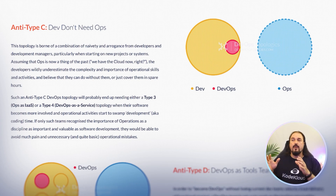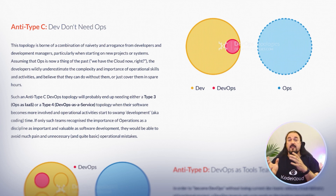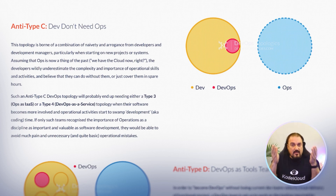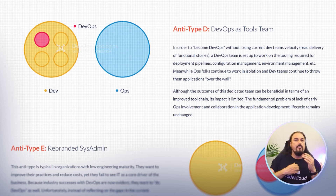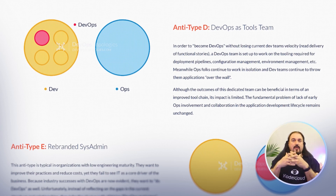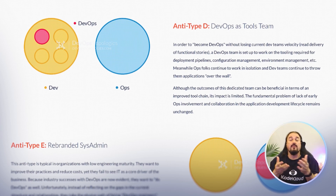Anti-type C is where devs don't need operations — they basically take DevOps and stick it inside a developer organization. The problem is that operations has very different concerns than development, so operational challenges go unattended and the silo remains. Anti-type D is DevOps as a tools team — that could work, but operations is still separate with their own concerns, and you're not really collaborating with them to capture their needs and help speed delivery into production.